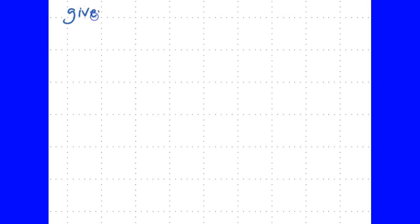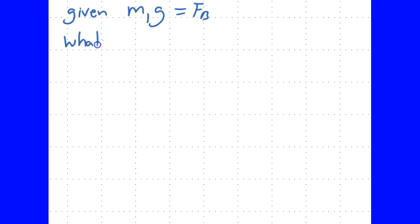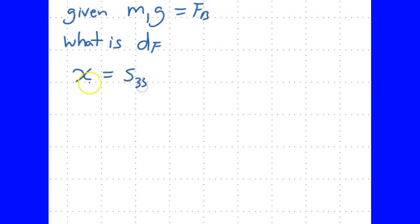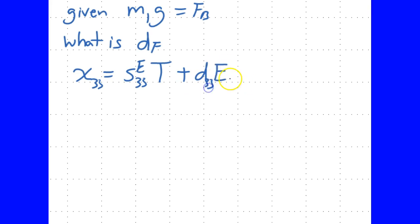So the question is: given the mass on the material — which is basically a force, mass times gravity — and assuming that is the blocking force, what is the free displacement? To solve this, we go to the piezoelectric constitutive equation: strain = s33·T + d33·E, where T is stress (using the notation that stress is T), d is the piezoelectric coefficient, and E is the electric field. We're working in the 33 direction — electric field in the three-direction, stress in 33.